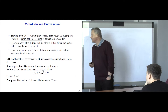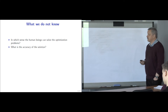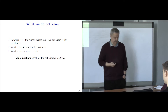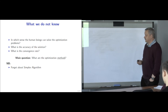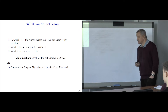We need to do something about this. We don't know in which sense people can solve optimization problems: what is the accuracy of the solution, the convergence rate, and most importantly, what are the optimization methods that can be implemented by human beings? Of course, in this study, we need to forget about complicated algorithms like simplex methods or interior point methods. We need to be careful with the gradient because of high dimension and possible non-smoothness of the objective function.